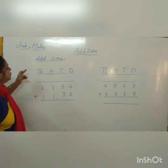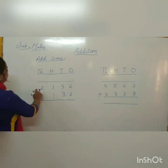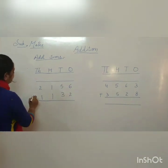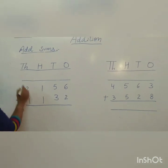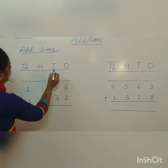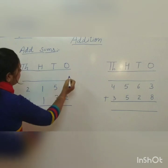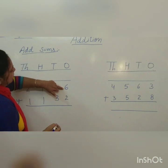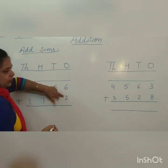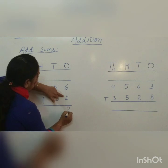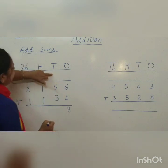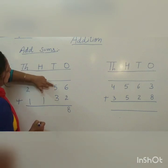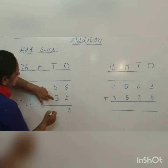Now we will do 4-digit sums. The first number is 2 thousands, 1 hundred, 5 tens, 6 ones. The second number is 1 thousand, 1 hundred, 3 tens, 2 ones. We start from the ones place. 6 is the big number. 6 plus 2 is 8. Now come to the tens place. 5 plus 3. 5 is the big number. 5 plus 3 is 8.